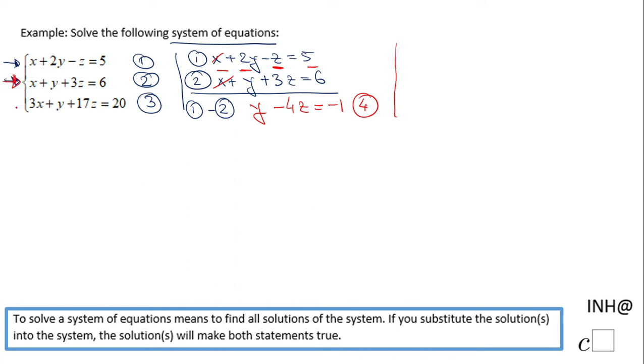Now we have to select another pair, so I'm going to go with equations number two and three. I'm going to copy equation number two: x + y + 3z = 6, and equation number three is 3x + y + 17z = 20. So how do I eliminate x here? By multiplying the second equation by -3.